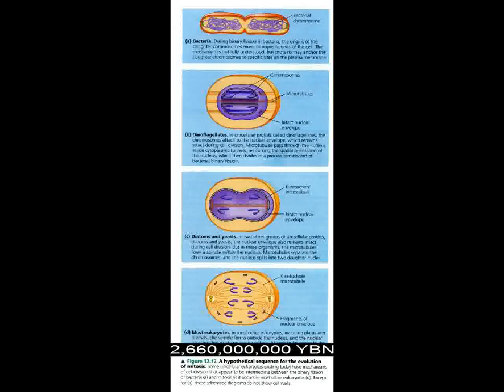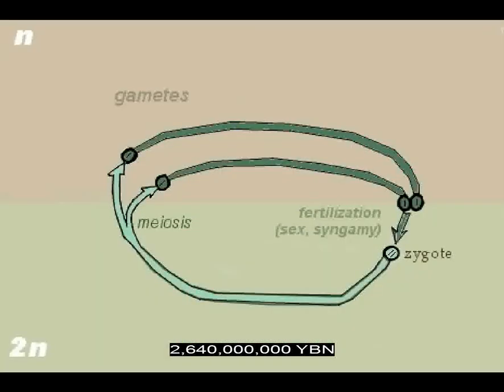Mitosis evolves in eukaryote cells — the process in which duplicated chromosomes are separated and the nucleus divides, resulting in two new nuclei each containing an identical copy of the parental chromosomes. Mitosis is usually immediately followed by cytokinesis, the division of the cytoplasm. Eukaryote sex evolves — this is the first diploid cell and the first zygote. Because of sex, two cells with different DNA can mix, providing more genetic variety, and having two chromosome sets provides a backup copy of important genes. All sexual species alternate between haploid and diploid. This begins the haplontic life cycle, where the only diploid cell is the zygote.